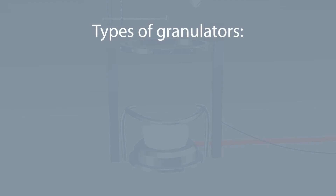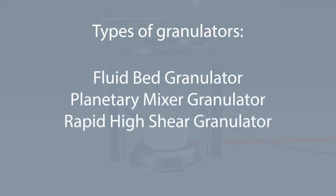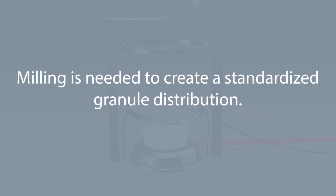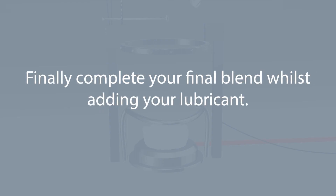There are many different machines and processes for wet granulation, such as fluid bed granulators, planetary mixer granulators, and rapid high shear granulators. After both wet and dry granulation, milling is needed to de-lump and create a standardised granule distribution. After milling, complete your final blend whilst adding lubricant. The lubricant is added after to coat the final granule, which allows the formulation to flow easier through your press.